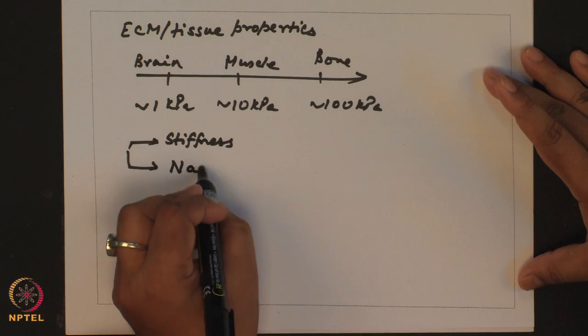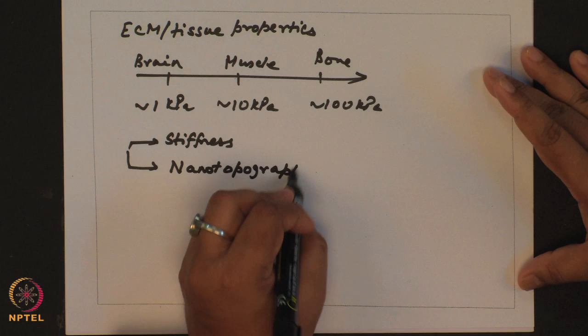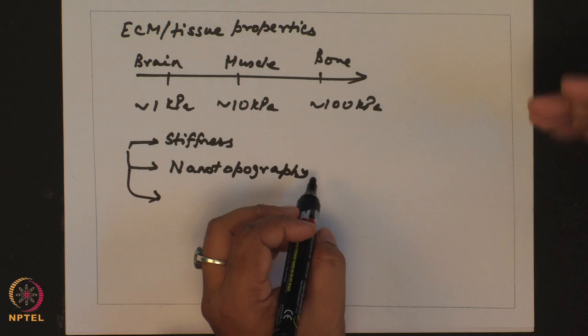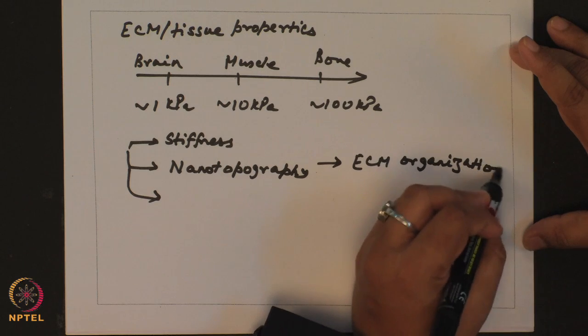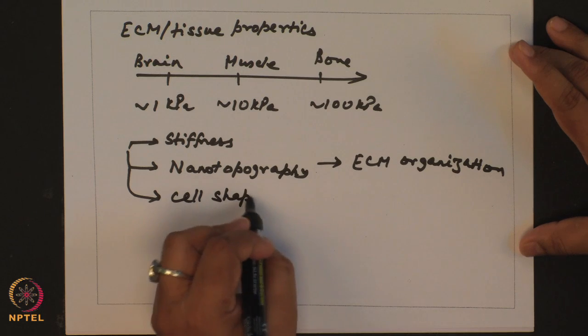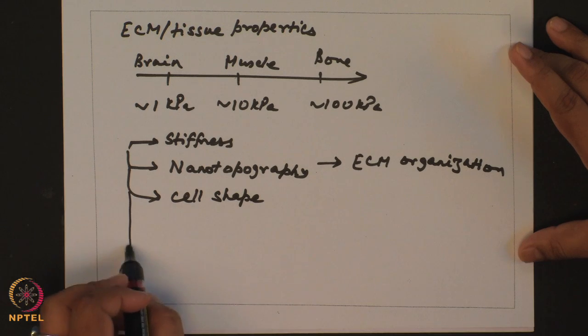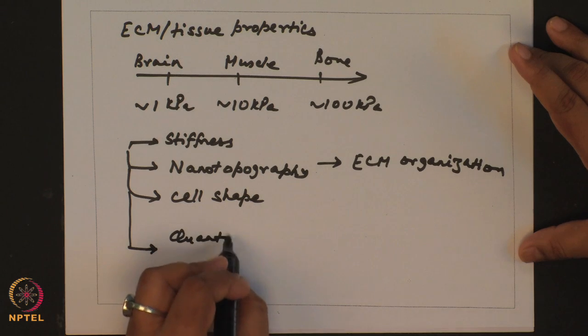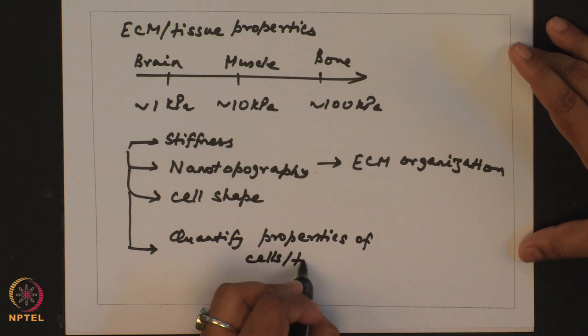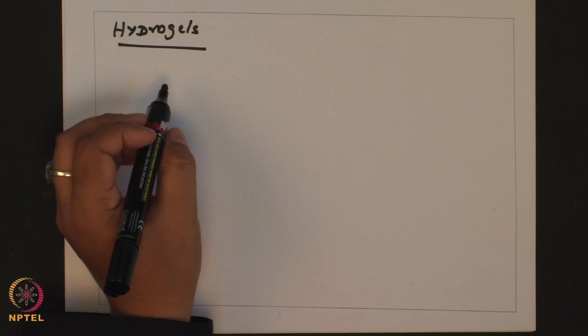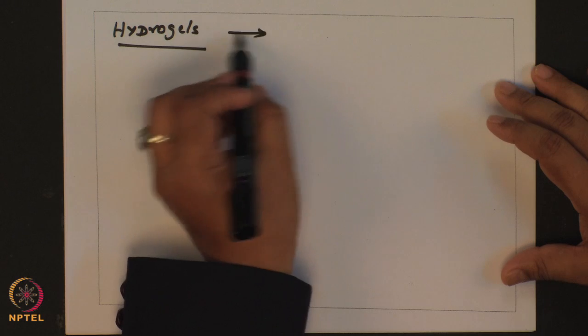By properties you can have multiple different things. You may want to tune the stiffness while studying the effect of ECM stiffness or bulk tissue stiffness in regulating cell behavior. You may want to tune nanotopography if you want to see what is the effect of ECM organization. You may want to regulate cell shape. And you may also want to measure and quantify properties of cells and tissues. As part of the different techniques relevant to mechanobiology, today we are going to discuss about hydrogels.